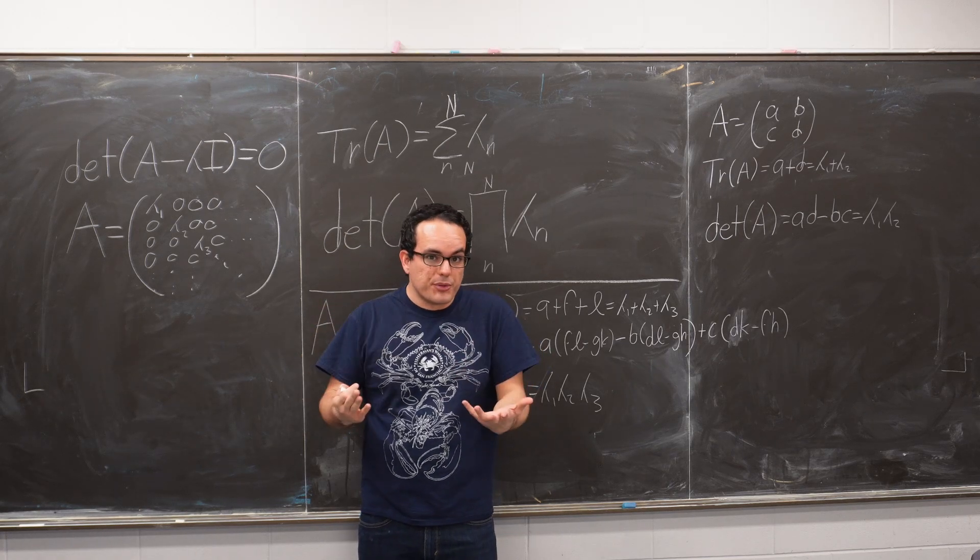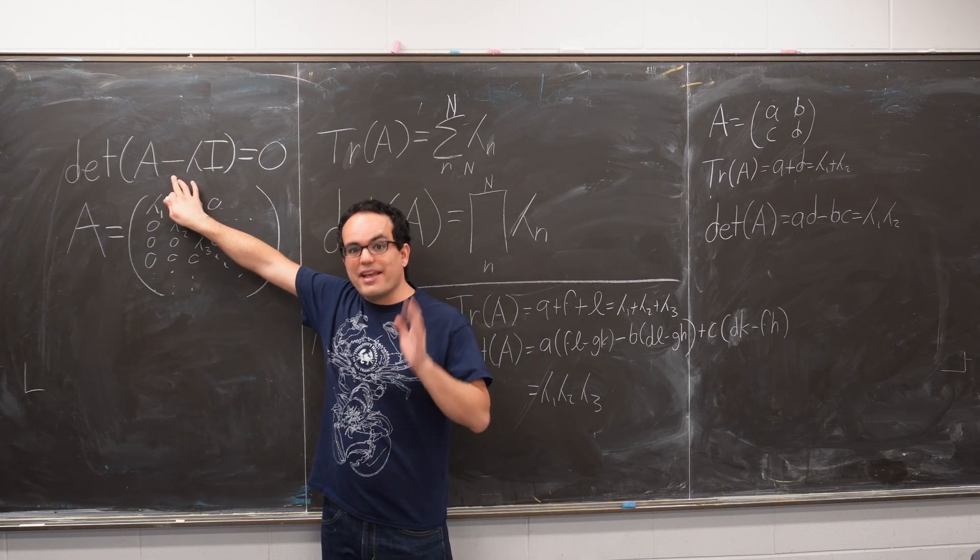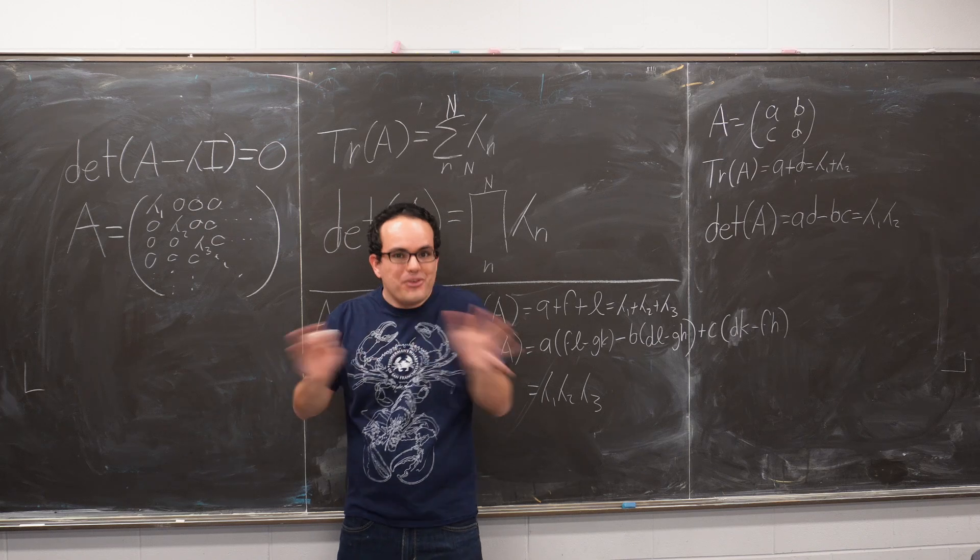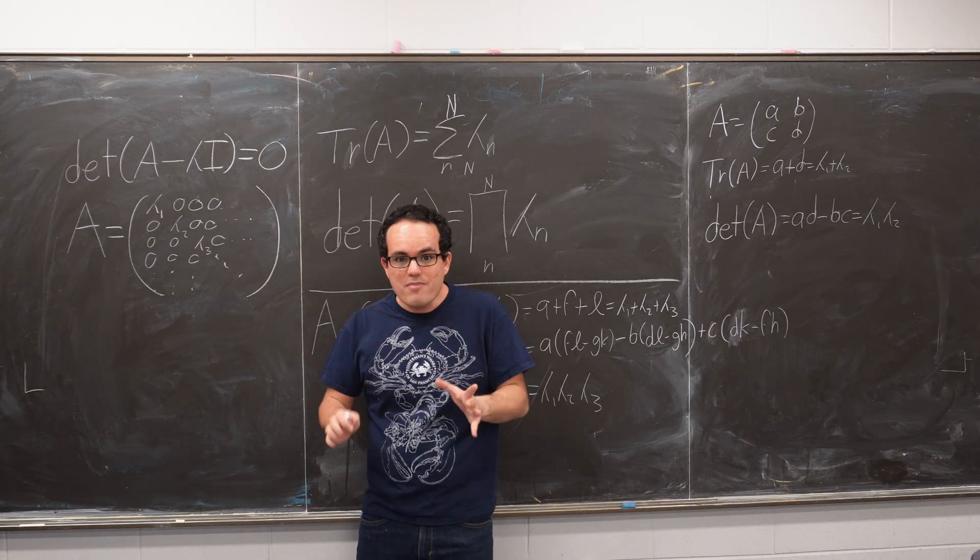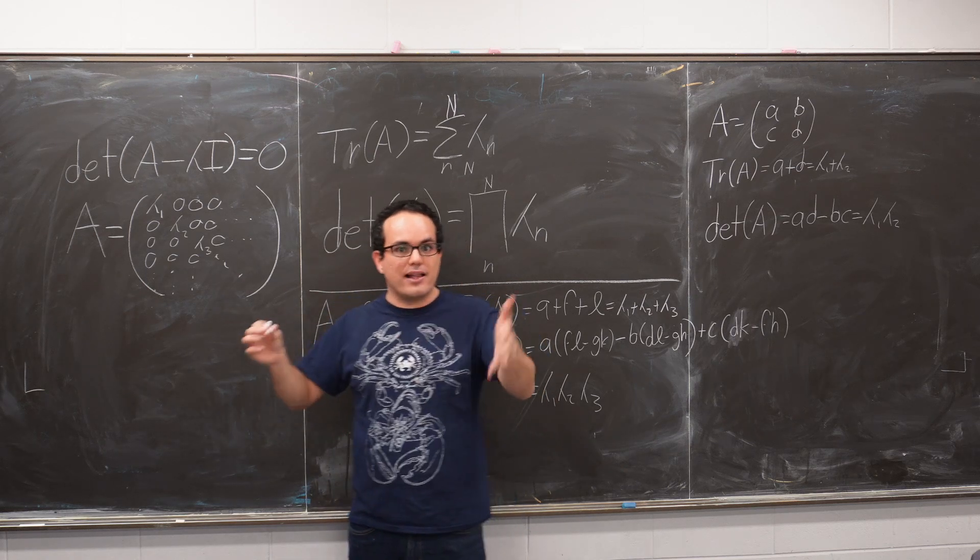If you want to find the eigenvalues of a matrix, you probably have been told that you need to use the characteristic equation. But it turns out that you probably don't need to use it. There's a much easier way to find them, and to show you, first I need to establish a few things about eigenvalues and matrices.